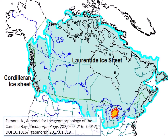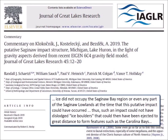The Glacier Ice Impact Hypothesis, published in 2017, proposes that an extraterrestrial impact on the Laurentide ice sheet ejected pieces of ice in ballistic trajectories, and that the secondary impacts of the ice pieces created the Carolina Bays and contributed to the extinction of the North American megafauna approximately 12,900 years ago. Some scientists have objected to this idea because by that time the Laurentide ice sheet had receded. According to a paper by Schetzel et al., ice did not occupy the Saginaw Bay region or even any part of the Saginaw Lowlands at the time that this putative impact could have occurred. Thus, such an impact could not have dislodged ice boulders that could then have been ejected to great distances to form features such as the Carolina Bays.